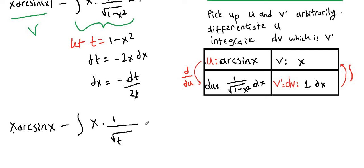And instead of dx, we are going to write negative dt over 2x. Here x is cancelled out, and we can pull 1 half in front of the integral sign. And negative times negative makes positive.